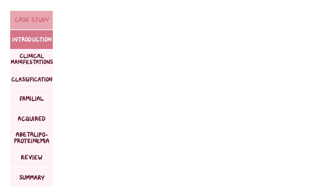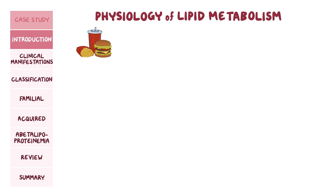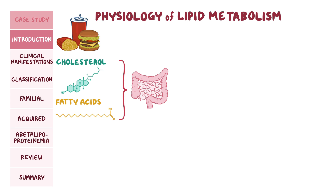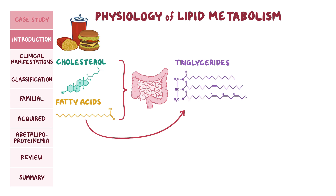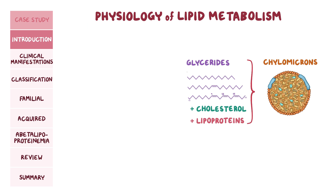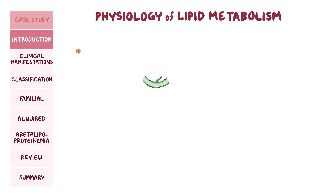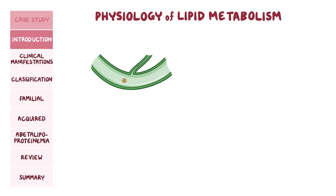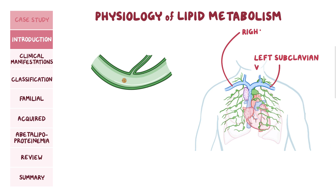Let's do a quick overview of the physiology of lipid metabolism. After eating a fatty meal, cholesterol and fatty acids enter the intestinal cells. The fatty acids are assembled into triglycerides, and then they, along with a small amount of cholesterol, are packaged together with lipoproteins to form chylomicrons. Chylomicrons move into the lymphatic vessels and eventually end up getting emptied into the left and right subclavian veins, where they enter into the blood.